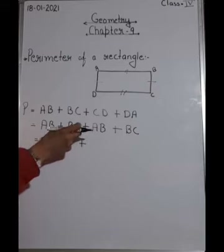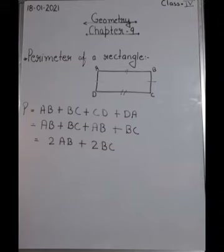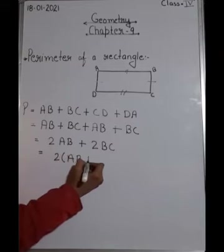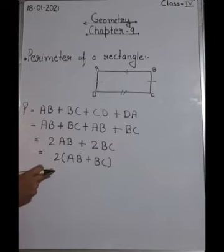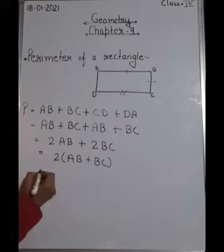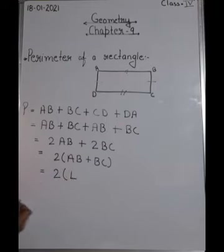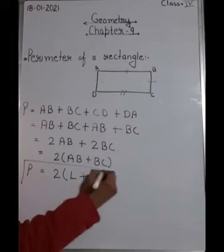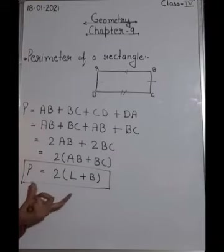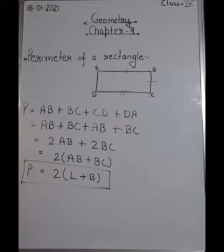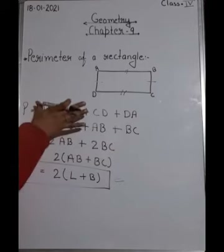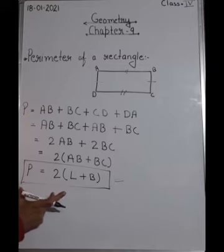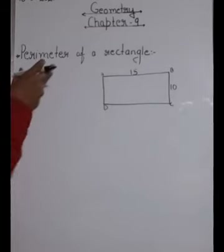We have two AB and two BC. Taking 2 as common, we write 2(AB + BC). Now AB is the length, written as l, and BC is the breadth, written as b. So the perimeter of a rectangle is 2(l + b). This is the general formula. You only need to learn this formula - the explanation was just to show how we derived it.